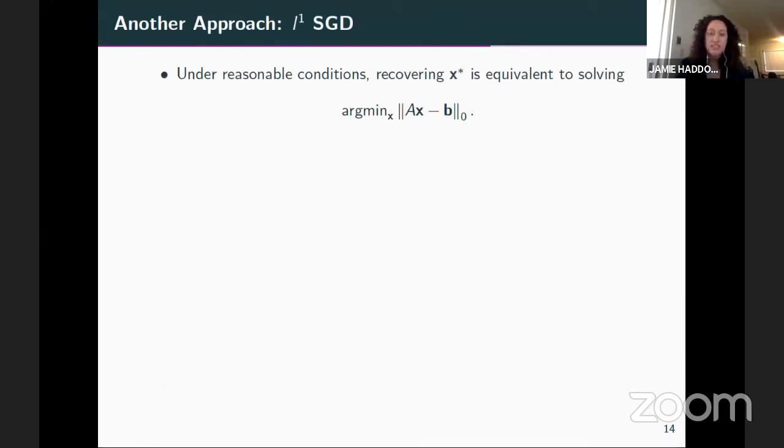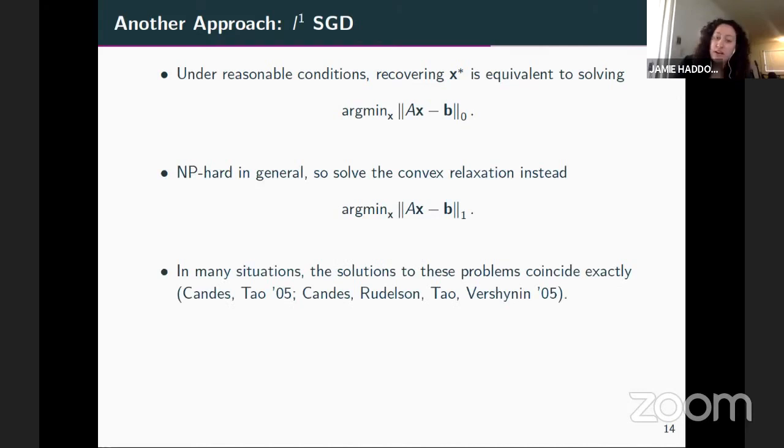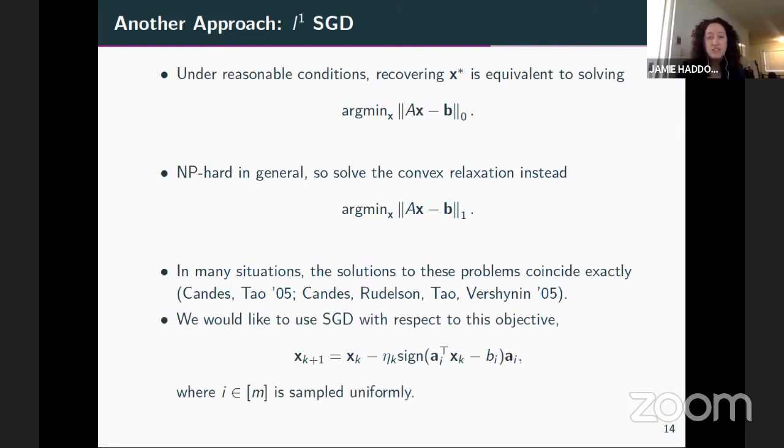Okay. An additional approach is instead of using randomized Kaczmarz to use SGD. So under some reasonable assumptions, recovering the solution, the pseudo solution to the system of equations is equivalent to just minimizing the number of non-zero entries of the residual. Of course, that's unfortunately NP-hard. So we've moved to solve the convex relaxation instead and minimize instead the one norm of the residual. And it's pretty classical work now of Candès and Tao and then Candès, Rudelson, Tao and Vershynin, that the solutions to these problems will coincide exactly.